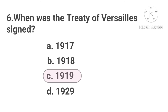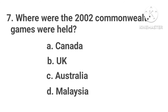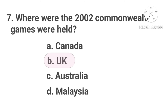Correct answer is Option C. Where were the 2002 Commonwealth Games held? Option A: Canada. Option B: UK. Option C: Australia. Option D: Malaysia. The correct answer is Option B.